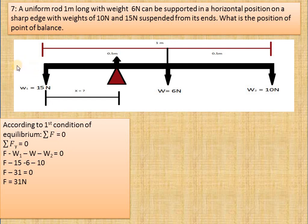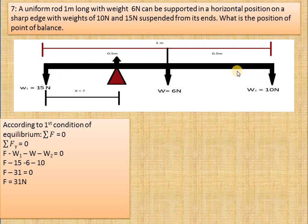That is, the sum of all forces acting along the x-axis equals zero and the sum of all forces acting along the y-axis equals zero. But in the direction of the x-axis we have no force acting, that's why we have directly all the forces acting along the y-axis equal to zero. We have the edge force in the positive y-axis direction and the three weights in the negative y-axis direction.